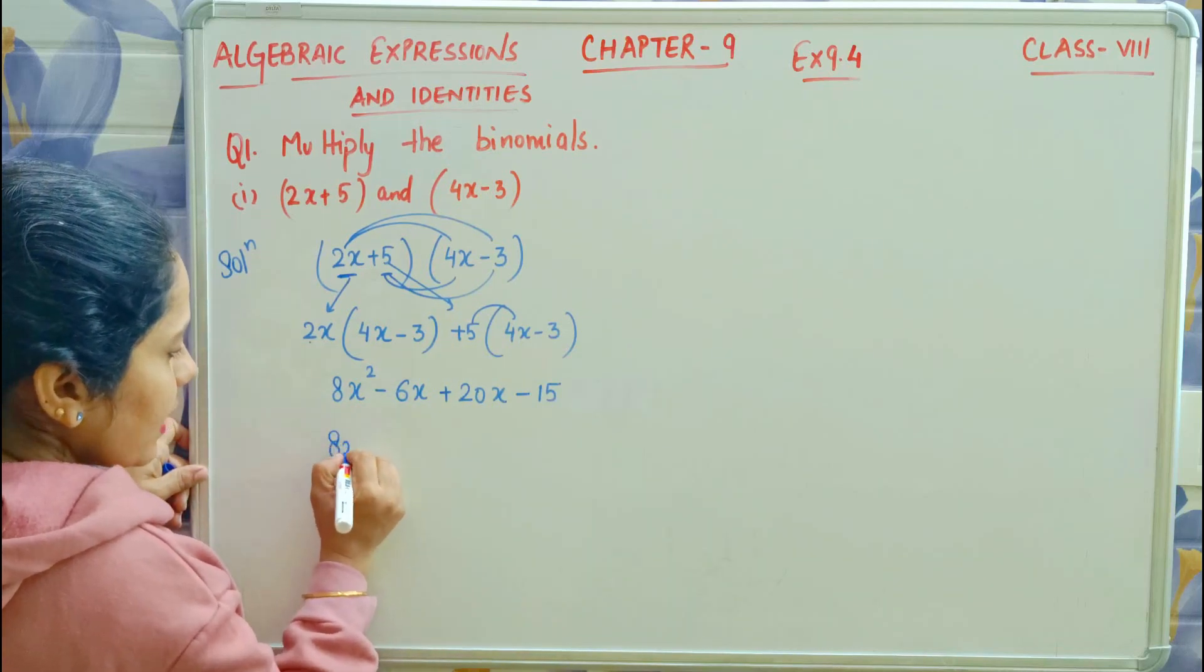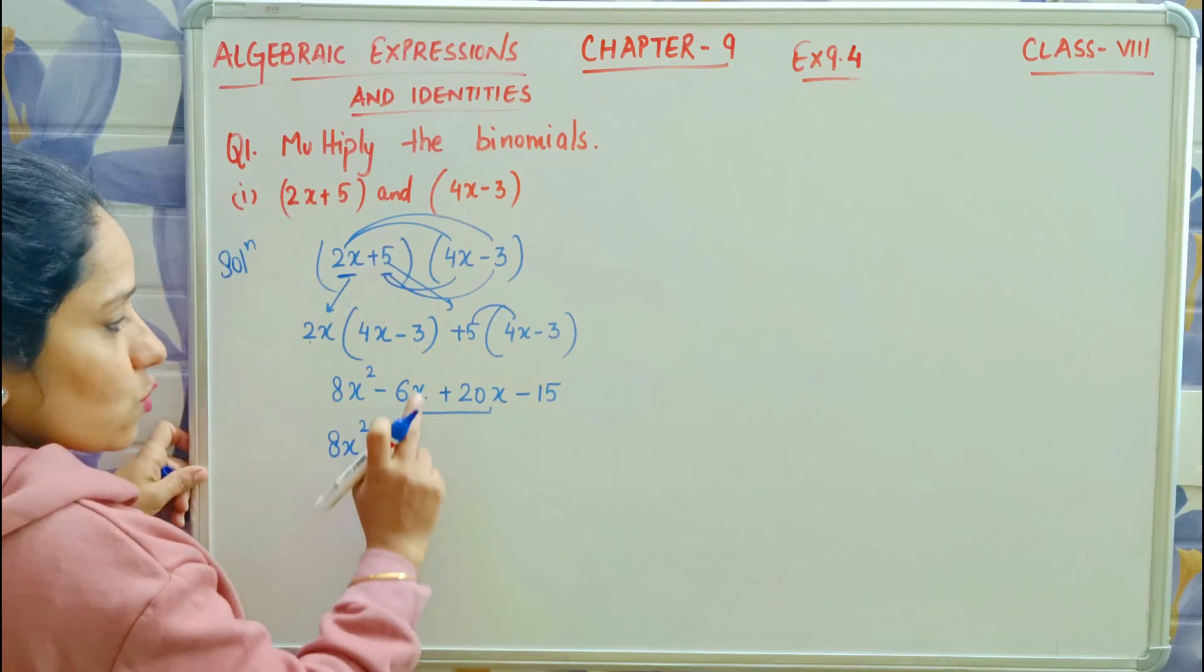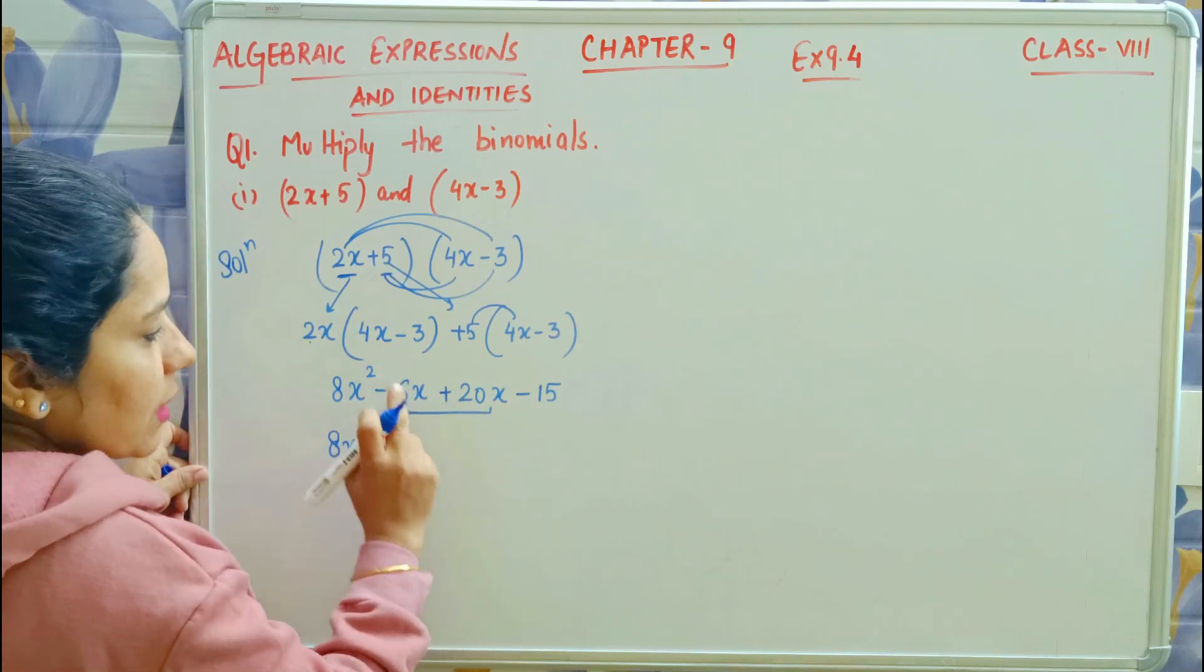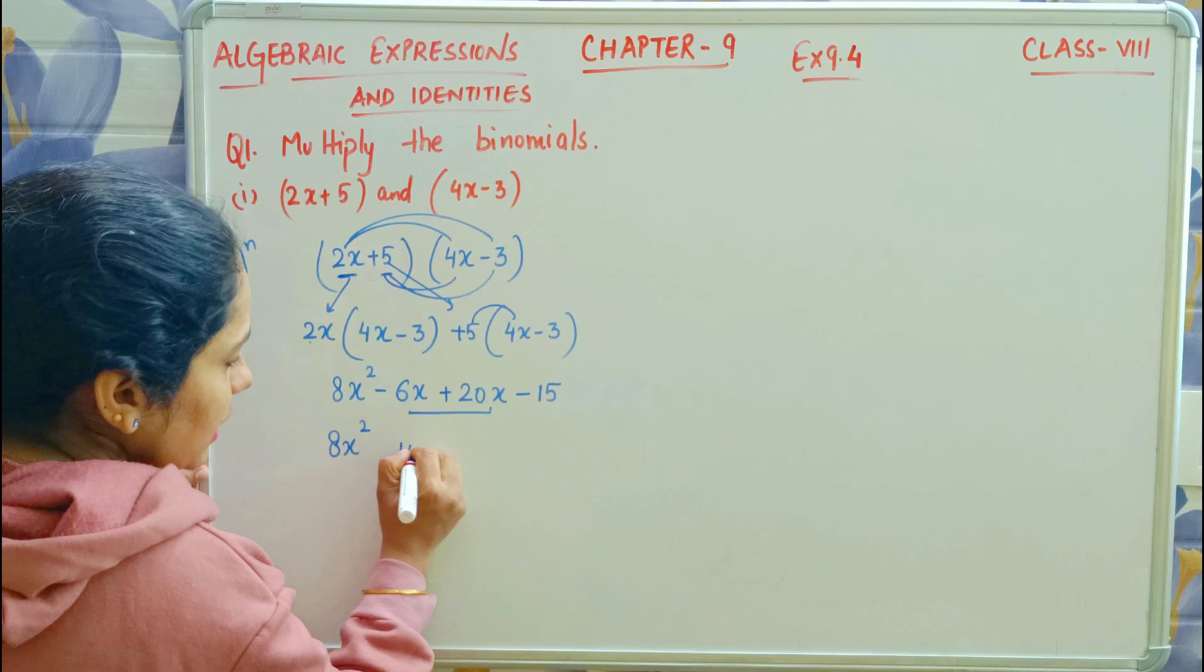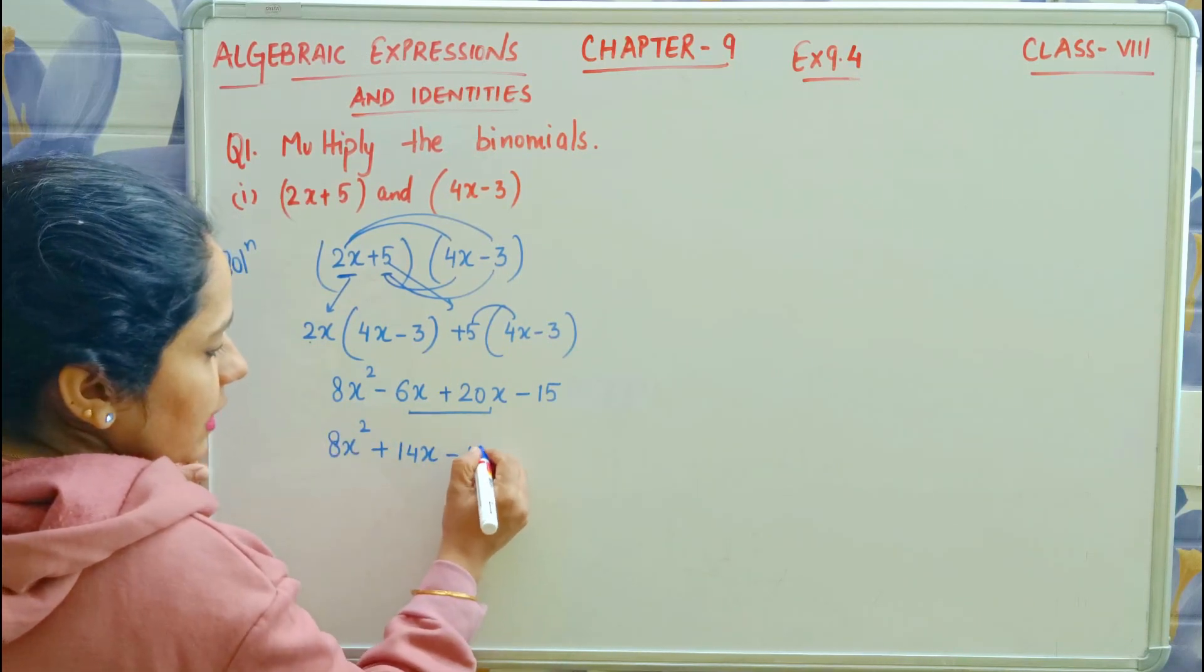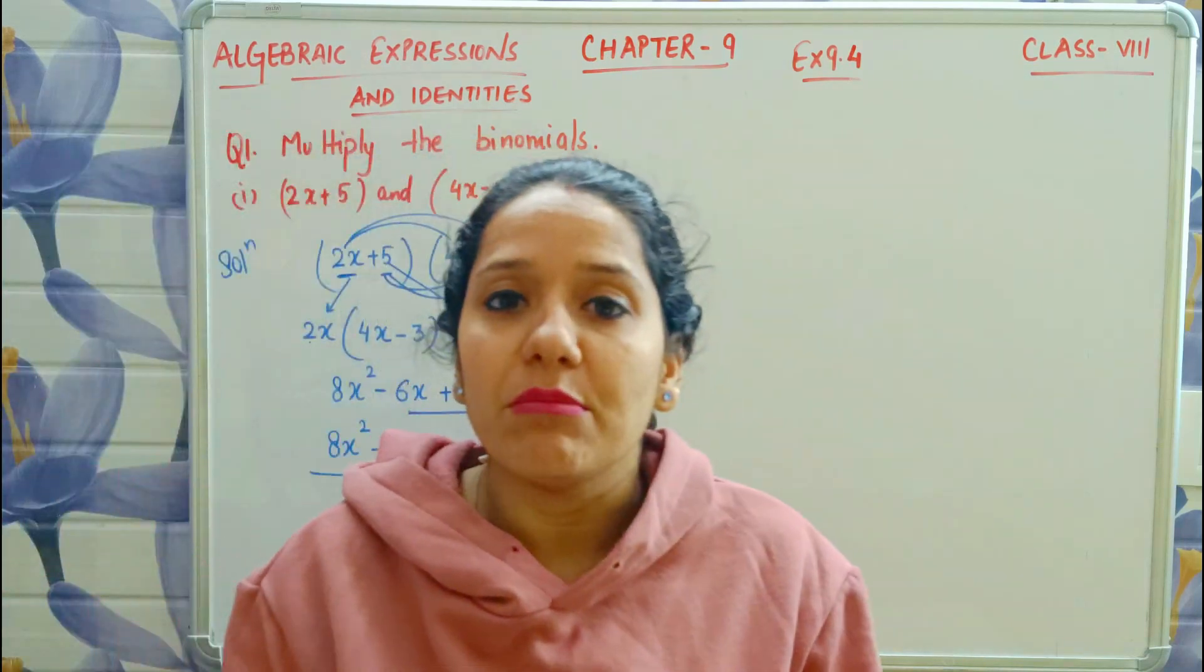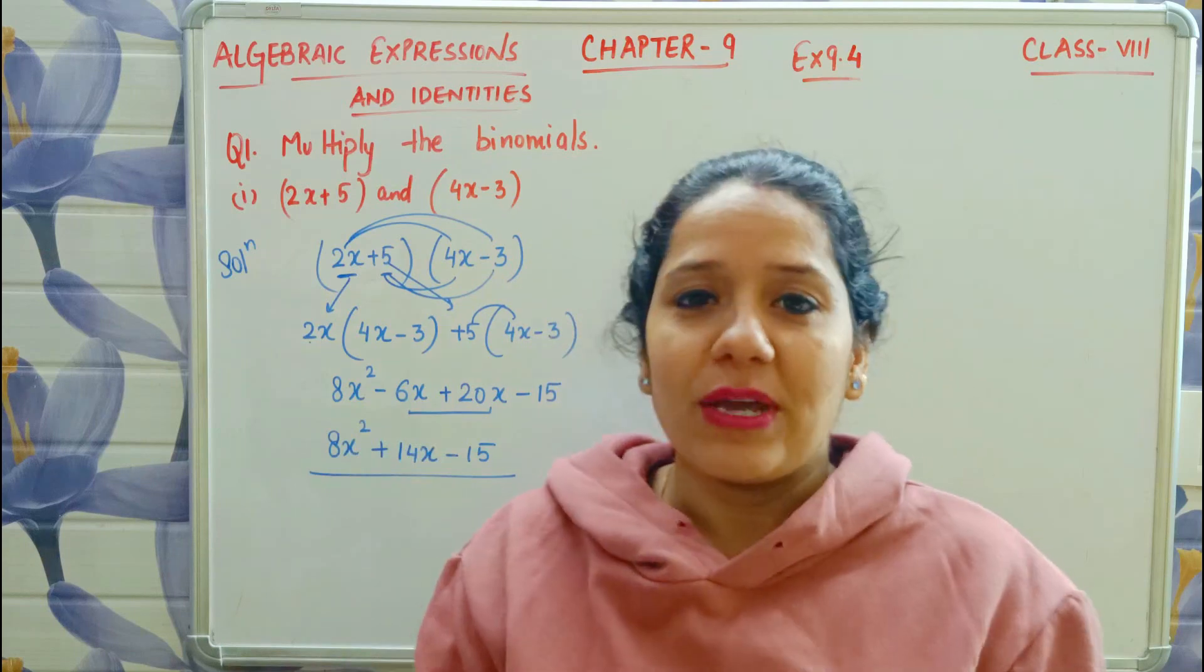Now see, 8x squared as it is. These two terms are like terms, we'll solve them. Plus minus, minus 20 minus 6 is 14x. And minus 15 as it is. So this is your product when you multiply both.